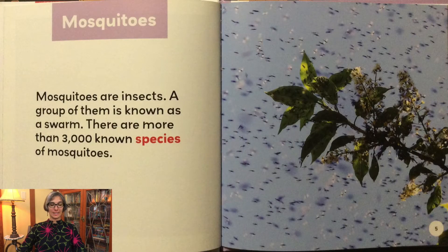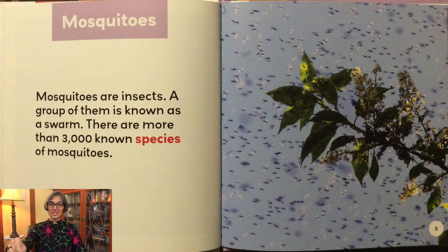Mosquitoes are insects. A group of them is known as a swarm. There are more than 3,000 known species of mosquitoes.